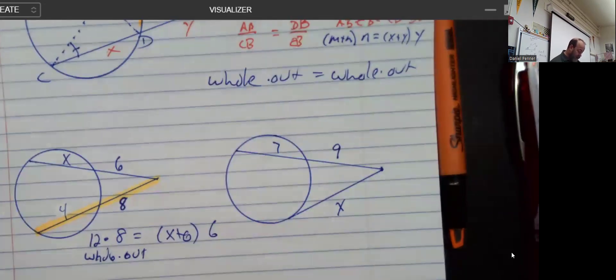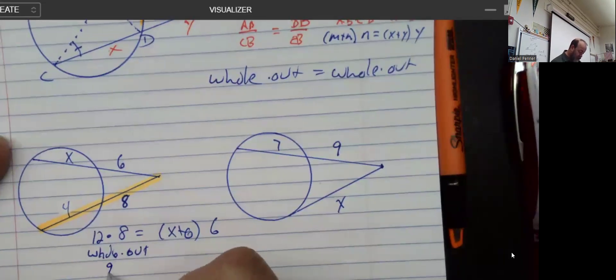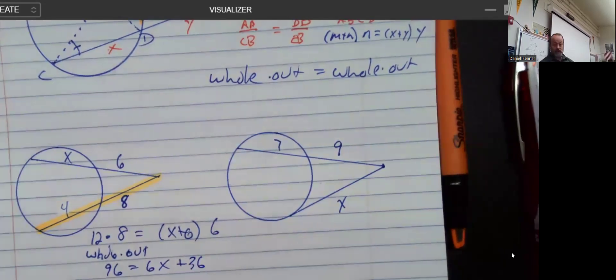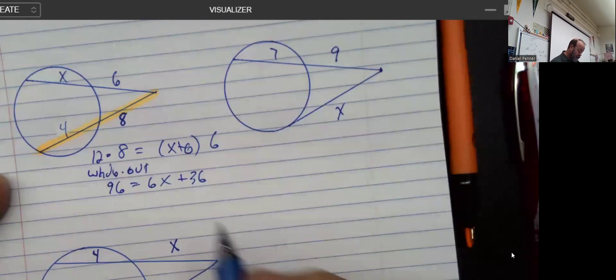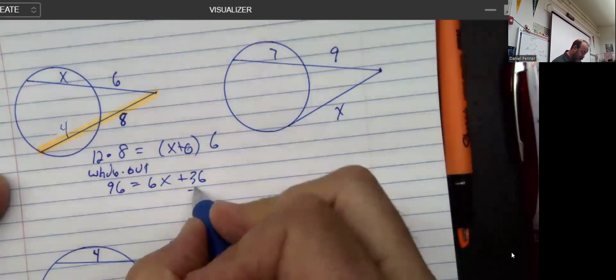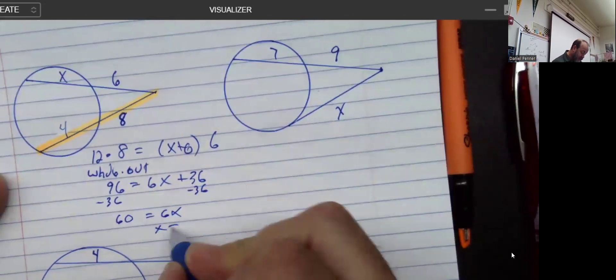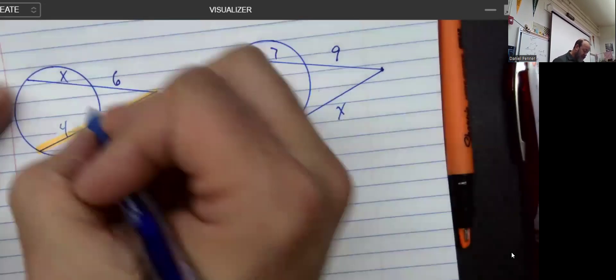Now, depending on how you like to look at it, most people are going to go ahead and use the distributive property, although you certainly would not have to. I'll subtract 36 from both sides. And I got this, and so I got X equals 10. Now, let's just double check.